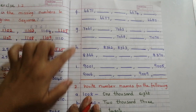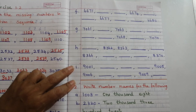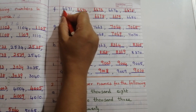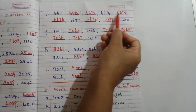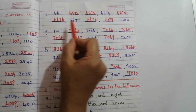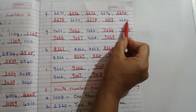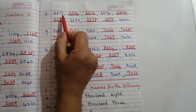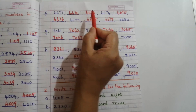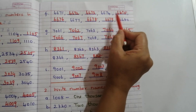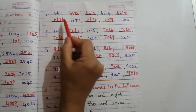Now copy all these problems and try to find out the answers. Problem F: 6671, dash, dash, 6674, dash, dash, 6677, dash, dash, 6680. After 6671 the number is 6672. So the sequence is: 6672, 6673, then after 6674 comes 6675, 6676.